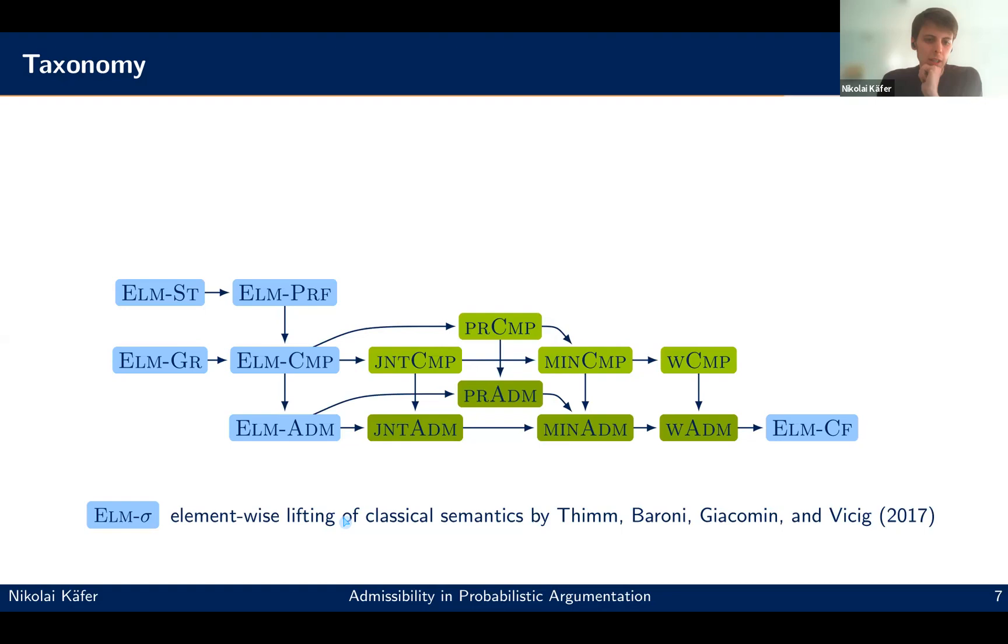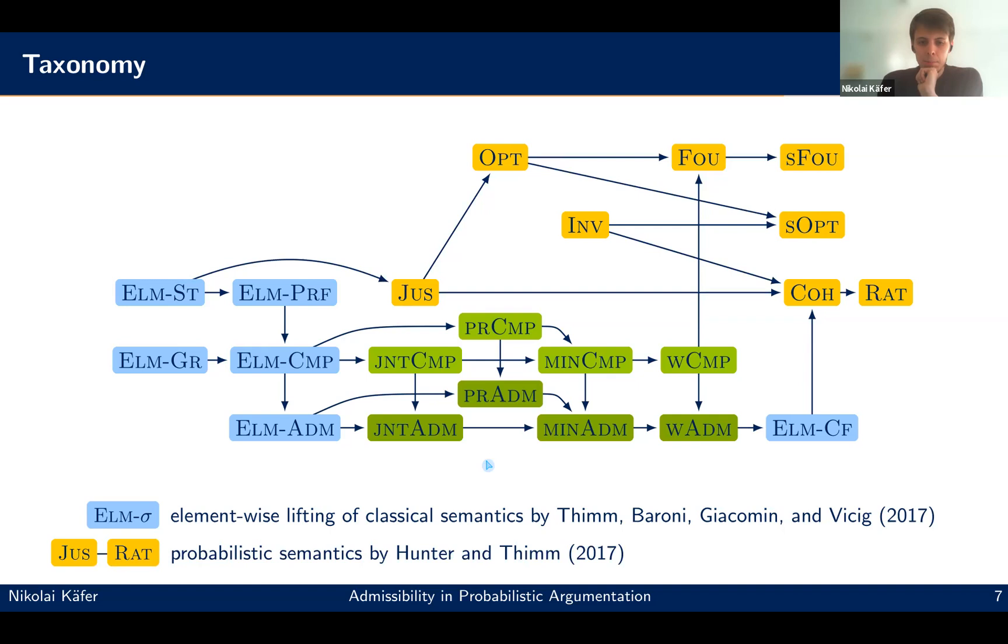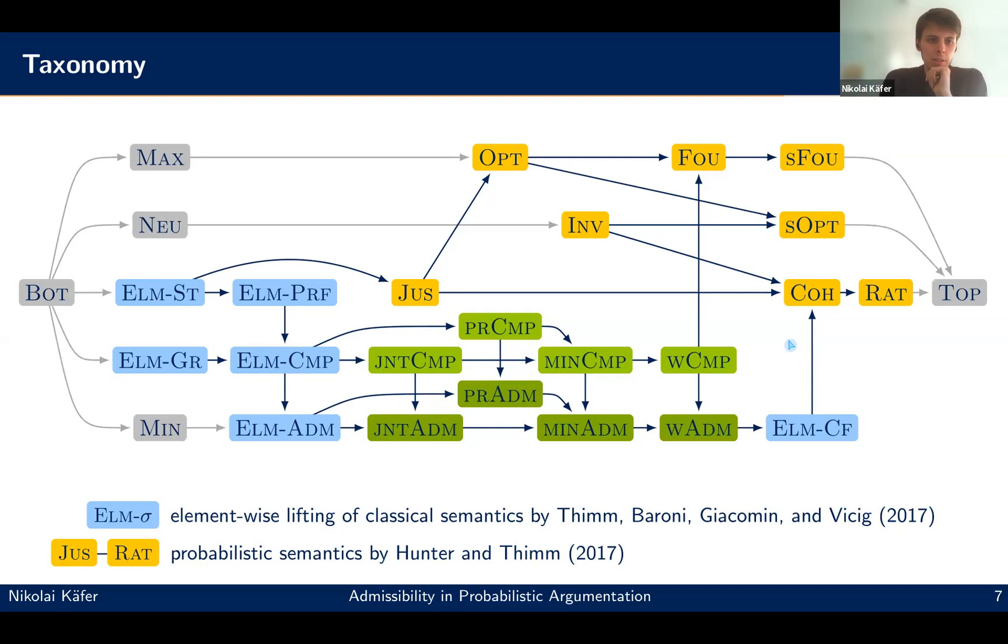And we also looked into the context of existing work on probabilistic argumentation. So one thing here is, in a paper by Tim Baroni from 2017, they considered element-wise lifting of classical semantics. So basically this says that only the argument sets that are classically admissible are allowed to be assigned some probability. Then we also get to a notion of admissibility and completeness, which is then stricter than the notions looked into by us. And there's also a number of probabilistic semantics by Hunter and Tim from 2017. And their focus was more on marginal probabilities of arguments. So it did not look into these Boolean combinations of arguments. And generally those are a bit less strict than our notions. And there are some trivial semantics to round up the picture.